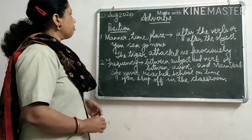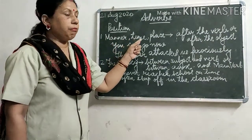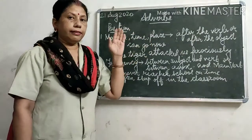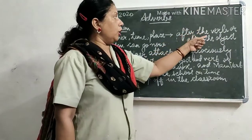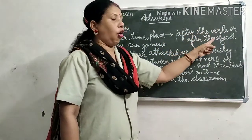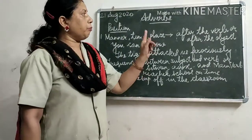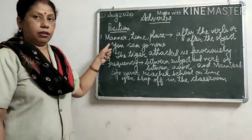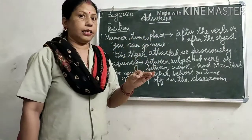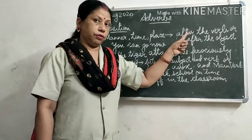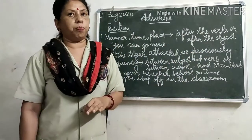When we have adverbs of manner, time, or place, we will place the adverb after the verb — or after the object, if the sentence has an object. So remember: adverbs of manner, time, and place go after the action word, or after the object if the sentence is having one.